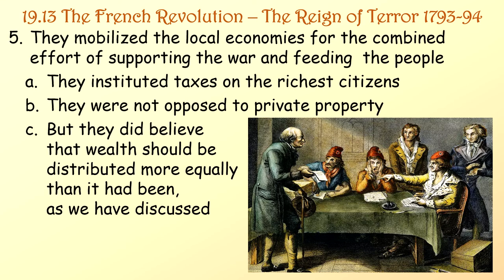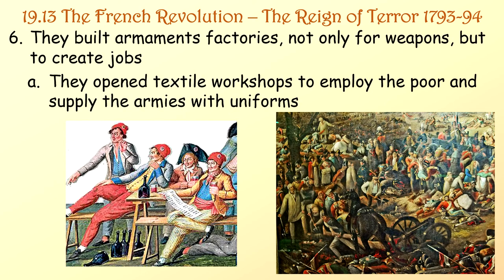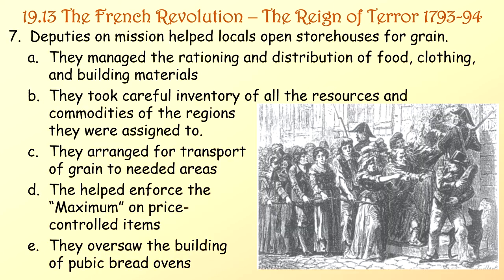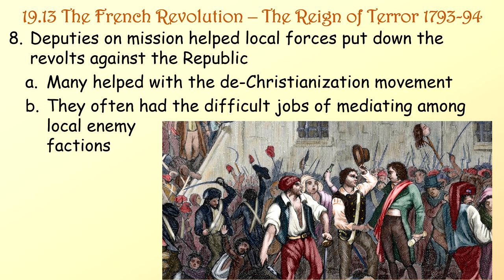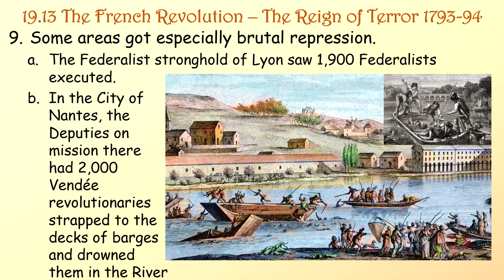Deputies on mission mobilized local economies to support the war and feed the people. They instituted taxes on the richest citizens — not opposed to private property, but believing wealth should be distributed more equally. They built armament factories not only for weapons but to create jobs, and opened textile workshops to employ the poor and supply armies with uniforms. Deputies on mission also helped local forces put down revolts, aided the dechristianization movement, and mediated among local enemy factions. Some areas got especially brutal repression: the Federalist stronghold of Lyon saw 1,900 Federalists executed, and in Nantes, deputies had 2,000 Vendée revolutionaries strapped to barges and drowned in the river.